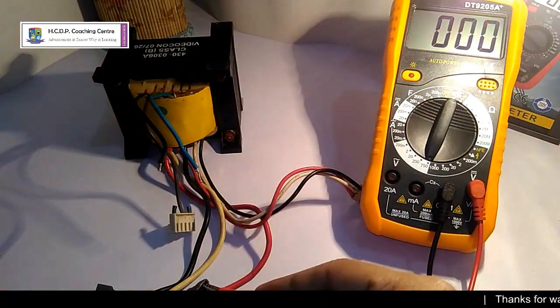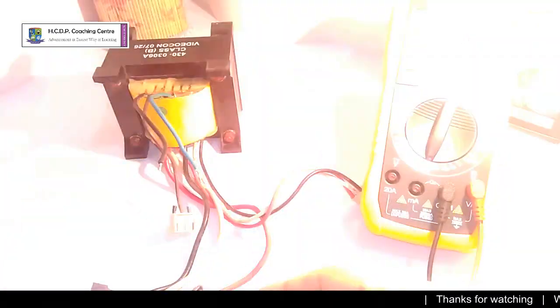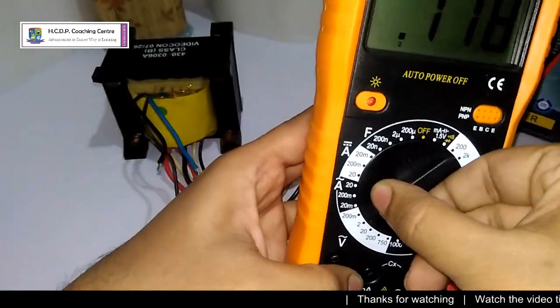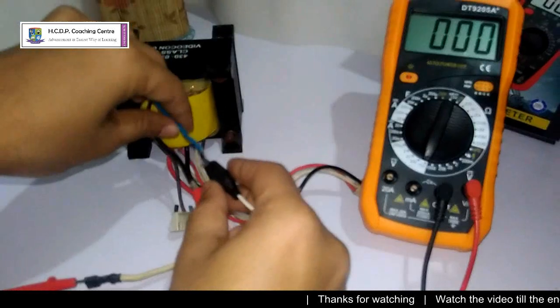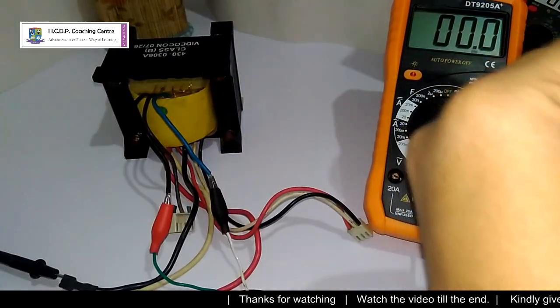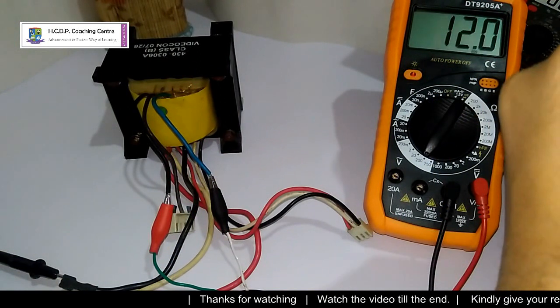Now I set the dial of my multimeter to AC voltage reading and connect the pins to the transformer. When I switched on the power supply, the meter shows a voltage reading of 12.7 volt AC.